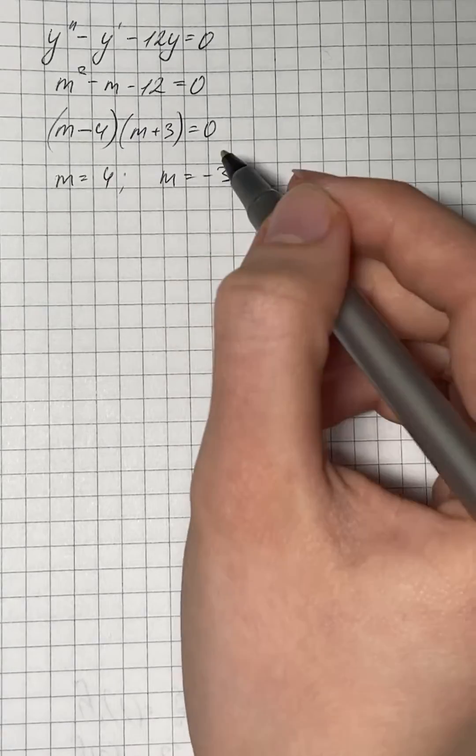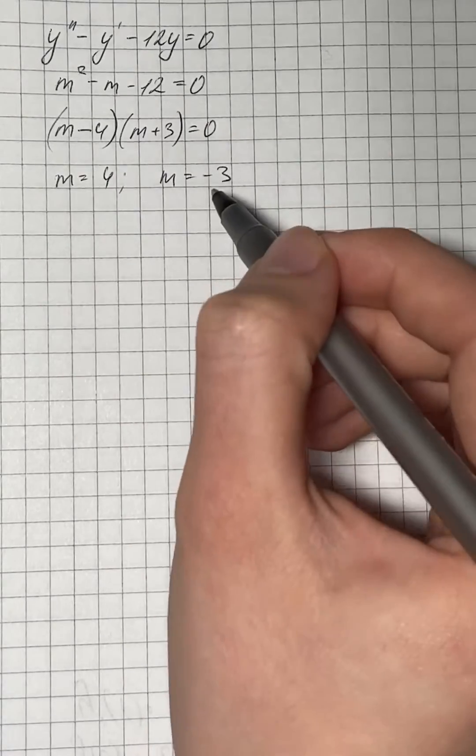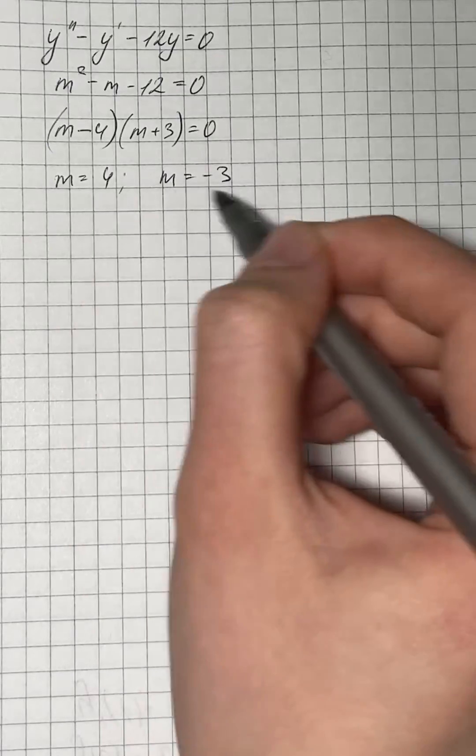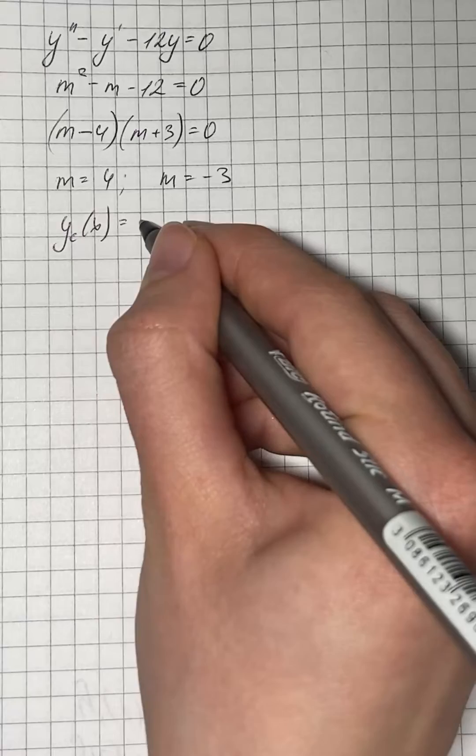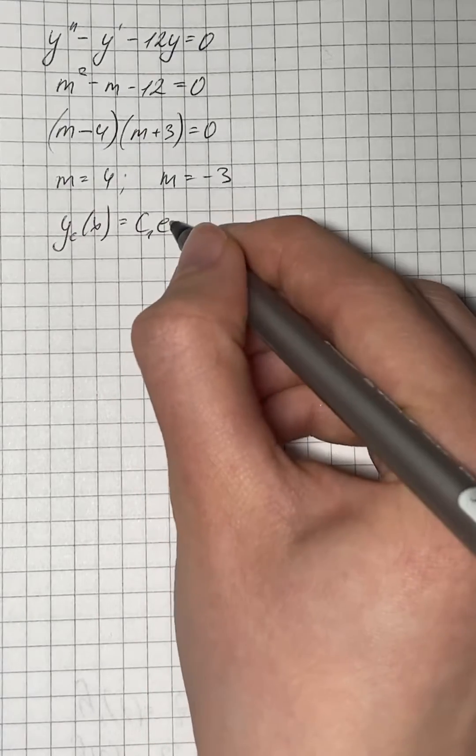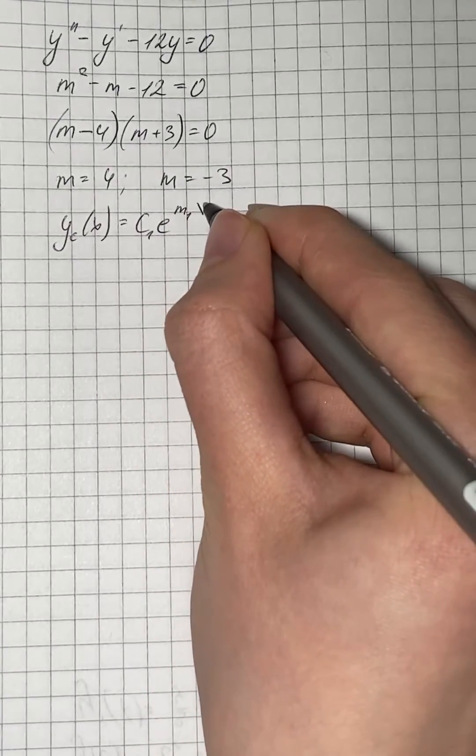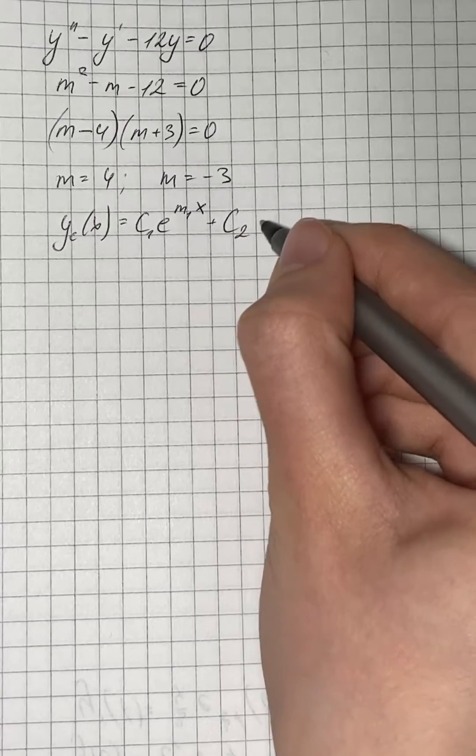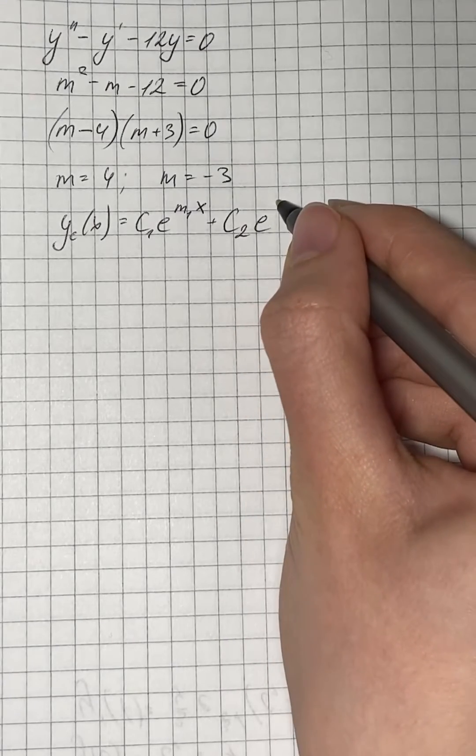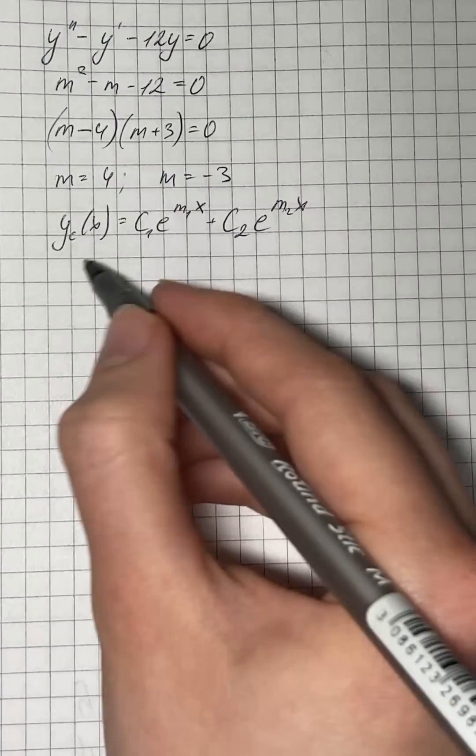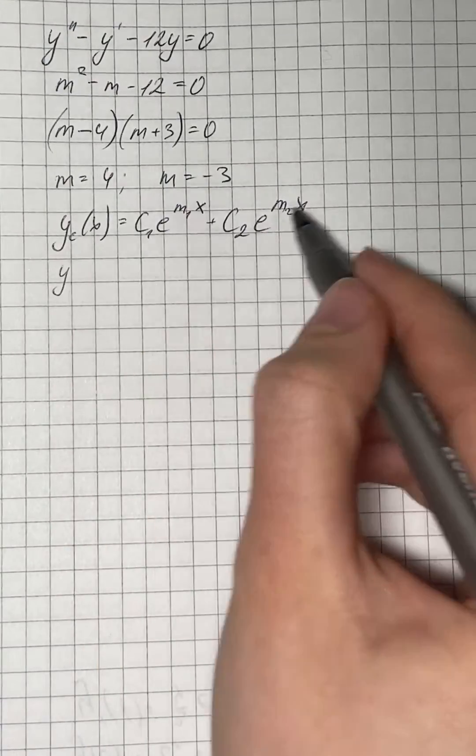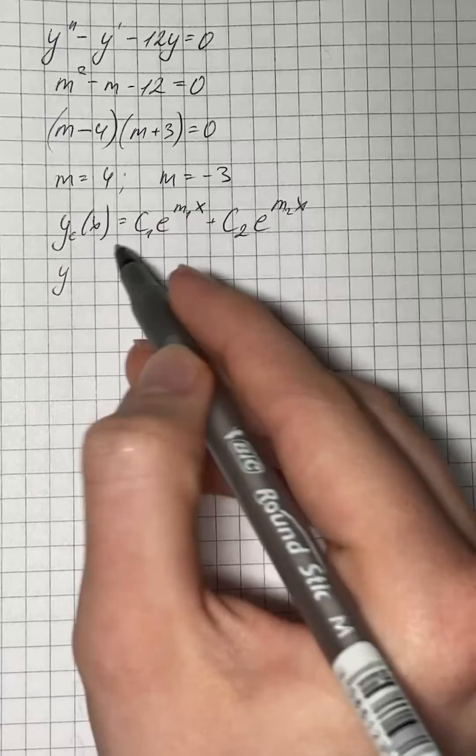It is known that the complementary solution for distinct roots is c₁e^(m₁x) + c₂e^(m₂x). So now we substitute m₁ and m₂ with our roots.